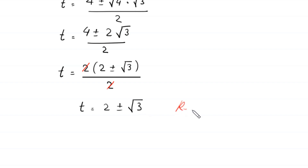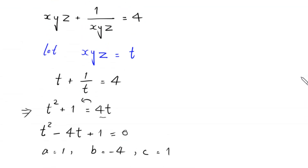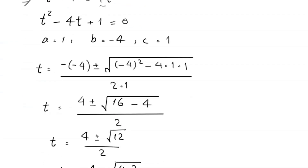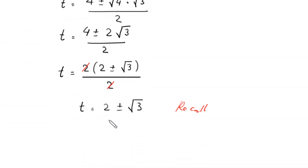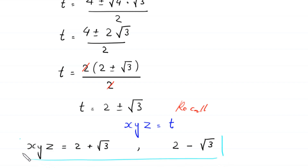Recall that we supposed xyz equals t. So from here we get two values of xyz: the first is 2 plus root 3, and the second is 2 minus root 3. This is the final answer of this problem.